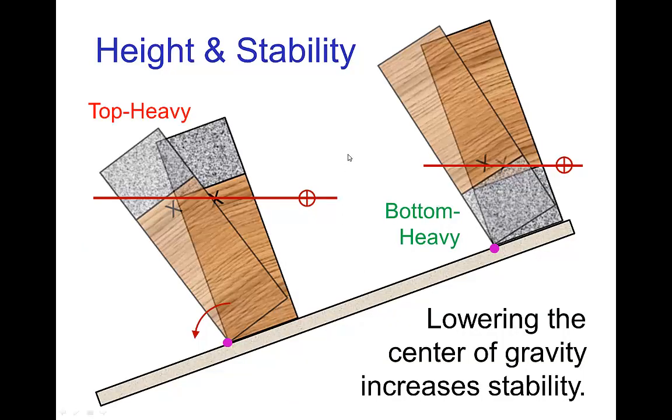This idea of having the center of gravity located far down on an object affects stability. In this example, if we have the case on the left where the object is top heavy, the center of gravity is up near the top. On this incline, the object is unstable to tipping over. The center of gravity, as the object starts to rotate, immediately starts to go down, and so the object falls over.